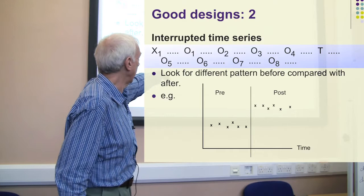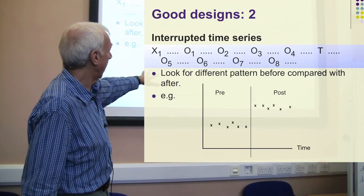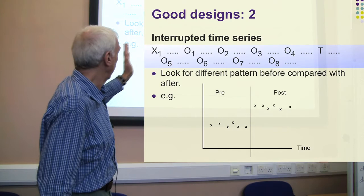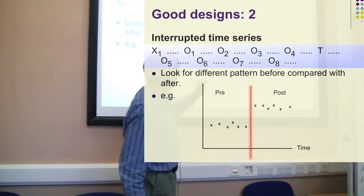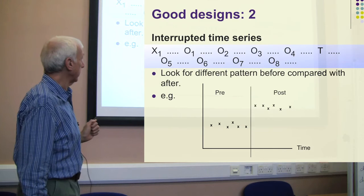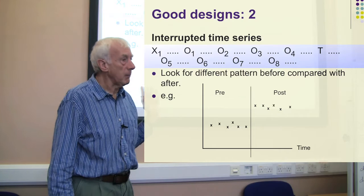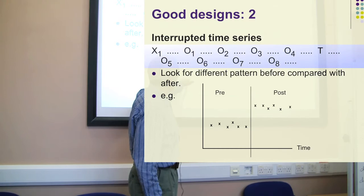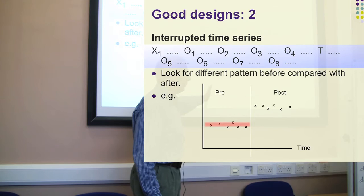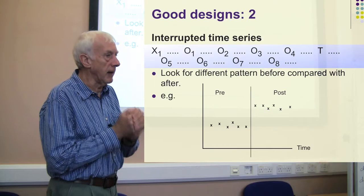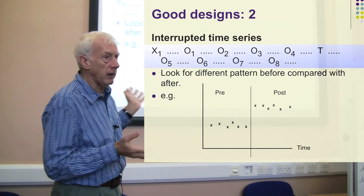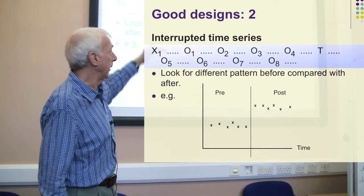Time goes across the x-axis left to right, and here is the treatment point where we give the treatment T. If you get a result where the figures are relatively stable beforehand and then suddenly shoot up and carry on being high afterwards, that's good evidence that the treatment made a difference — pretty solid. It's not absolutely certain because we didn't randomly allocate, but if you found something this clear-cut, you'd say that treatment did make a difference: it caused the scores to change in that significant fashion after the treatment.